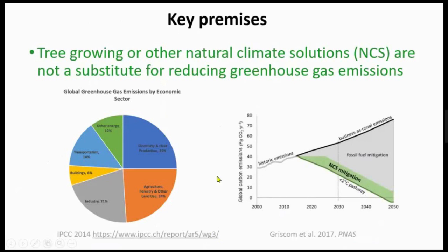Before I start, I want to highlight two key premises underlying what we're talking about today. First, tree growing and other natural climate solutions are not a substitute for reducing greenhouse gas emissions. A certain amount of emissions come from land use change, but the vast majority come from other anthropogenic sources like the transportation sector and housing. Any solution to reducing greenhouse gas emissions cannot rely entirely on tree planting or natural climate solutions — they are one part of the solution. If we're going to make the dramatic changes needed, we have to use every tool in our toolbox, and we need to reduce emissions.